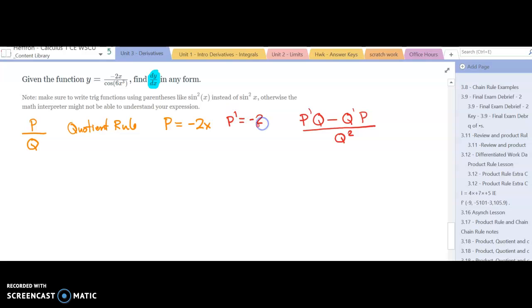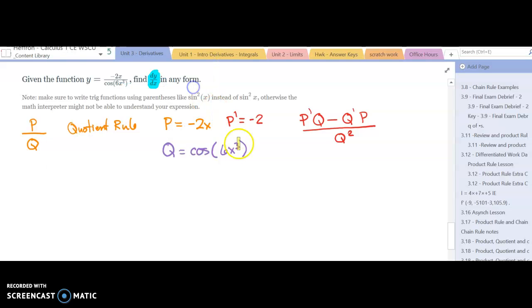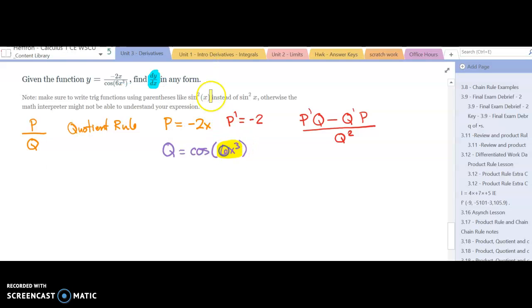So if P is negative 2x, P prime is negative 2. Now as we write down Q, cosine of 6x cubed, all of a sudden here we see that we have an inside function and an outside function. There's our chain rule, so in order to find Q prime we're going to need to use the chain rule.